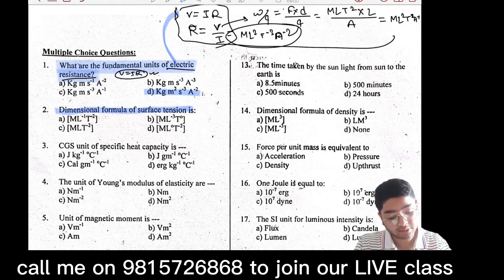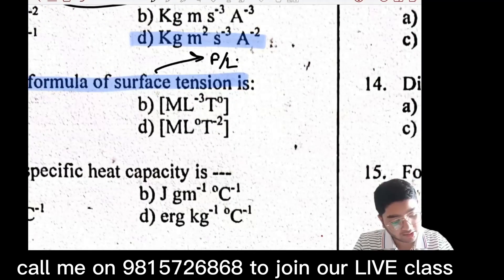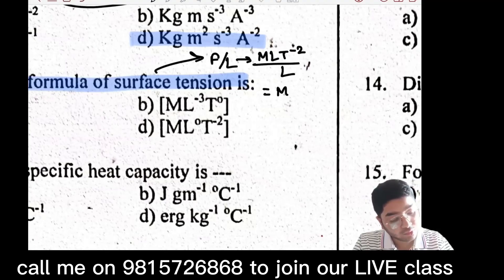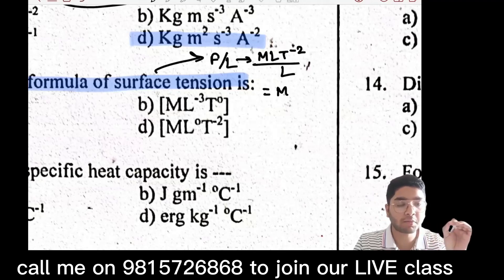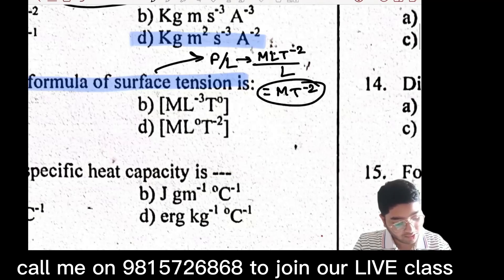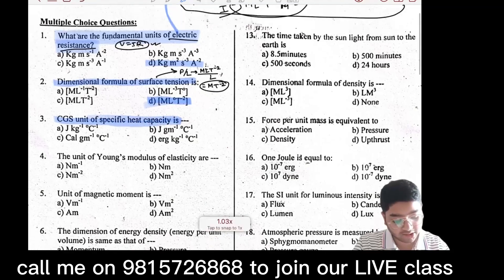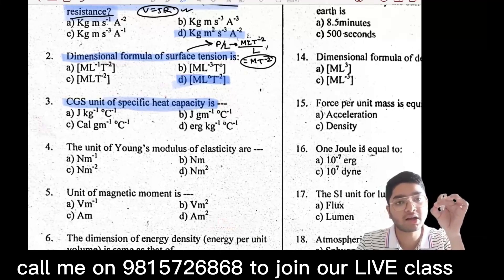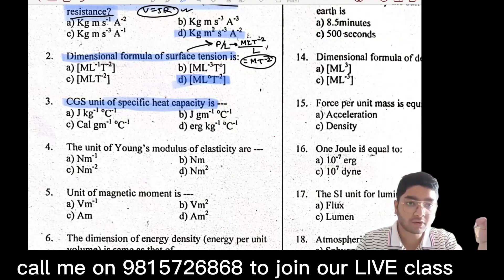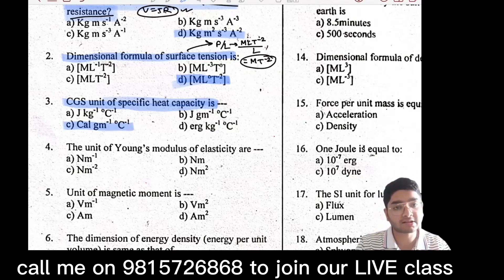The dimensional formula of surface tension: surface tension means force upon length, giving M·L⁻². Specific heat capacity: for 1 gram of water per degree Celsius, the unit is calories per gram per degree Celsius.